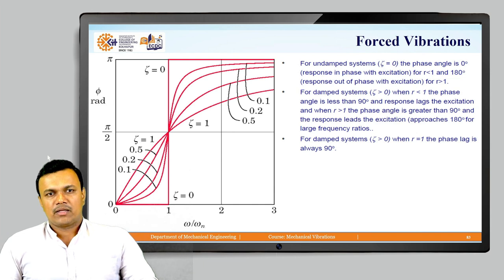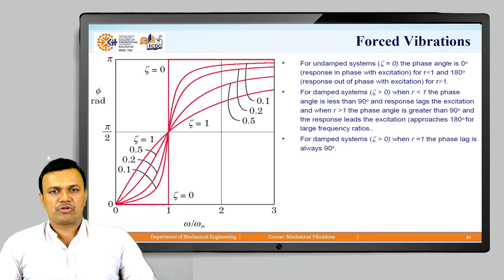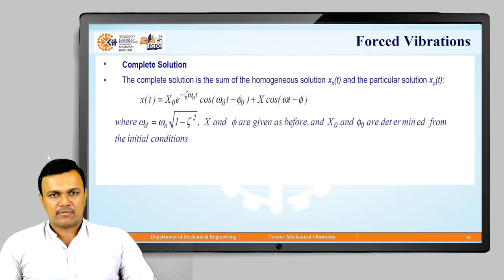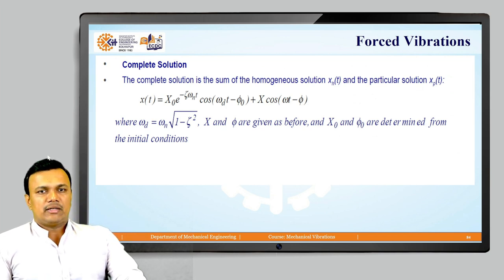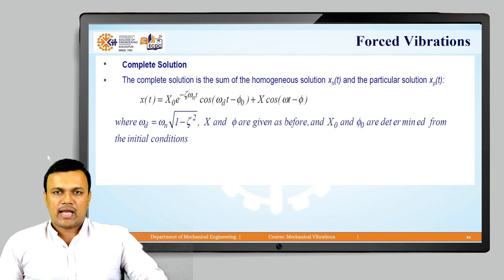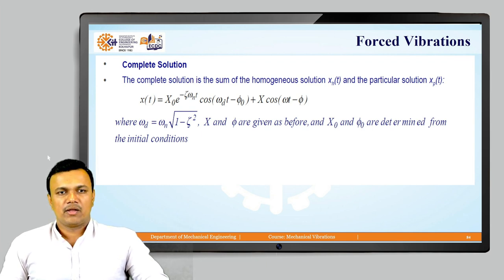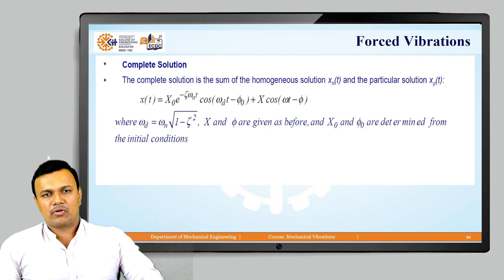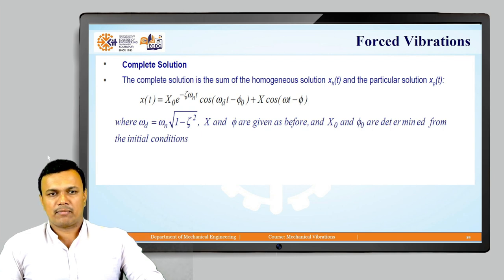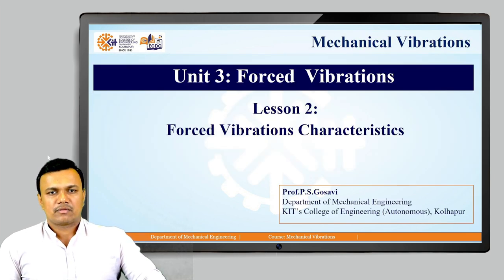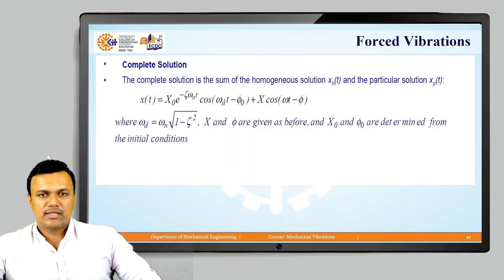In a single-degree-of-freedom system the phase is not that significant, but in two-degree-of-freedom or multi-degree-of-freedom systems it has more significance. The complete solution is the sum of the homogeneous solution xh and particular solution xp: x(t) = x0 e^(-zeta-omega-n-t) cos(omega-d-t minus phi-0) plus X cos(omega-t minus phi), where omega-d = omega-n sqrt(1 minus zeta-squared), X and phi are as derived, and x0 and phi-0 are determined from initial conditions.